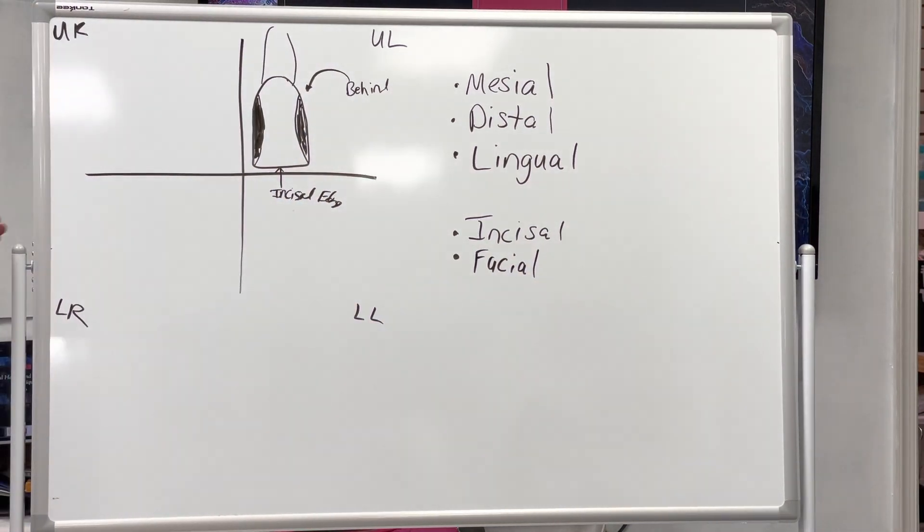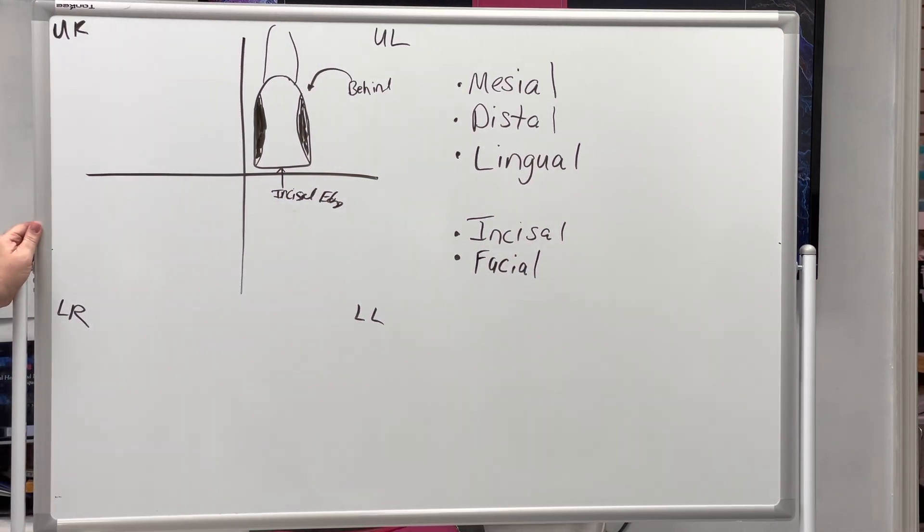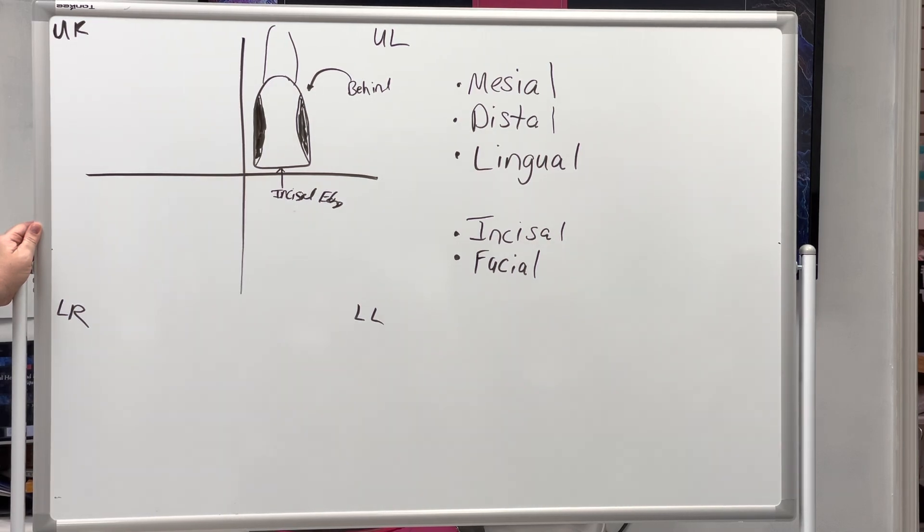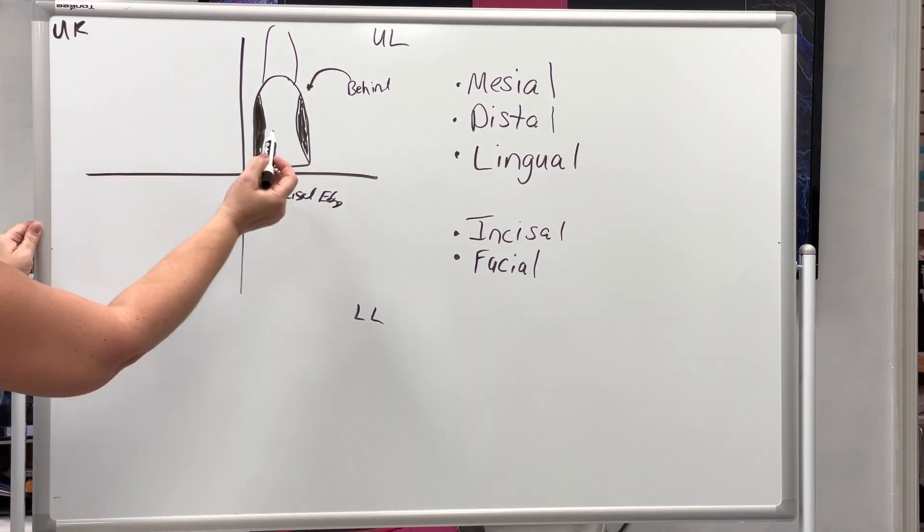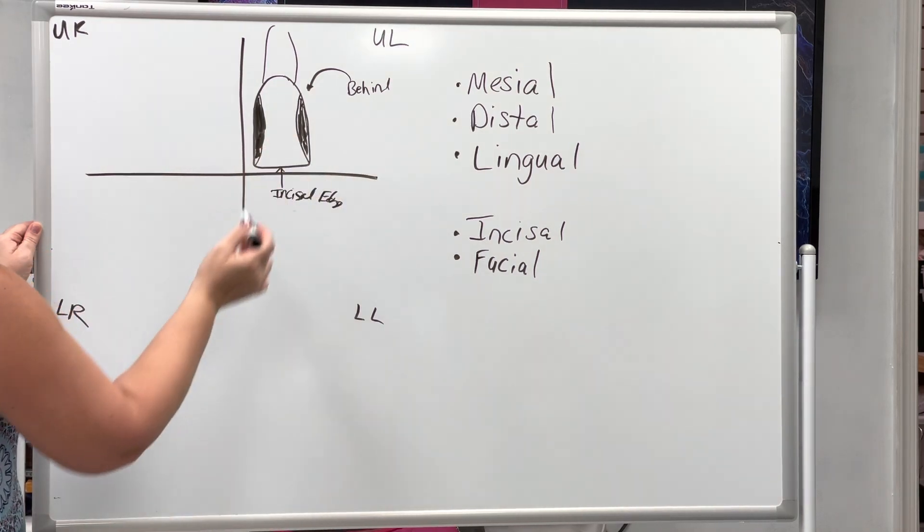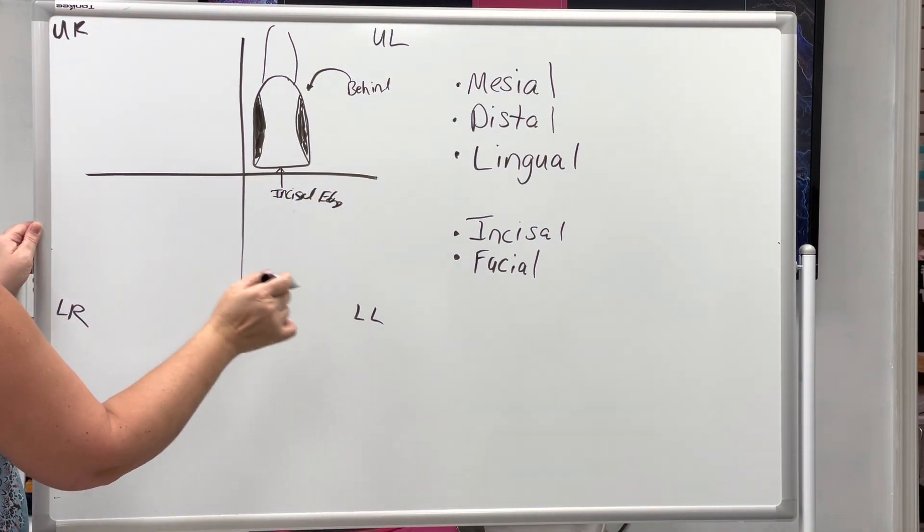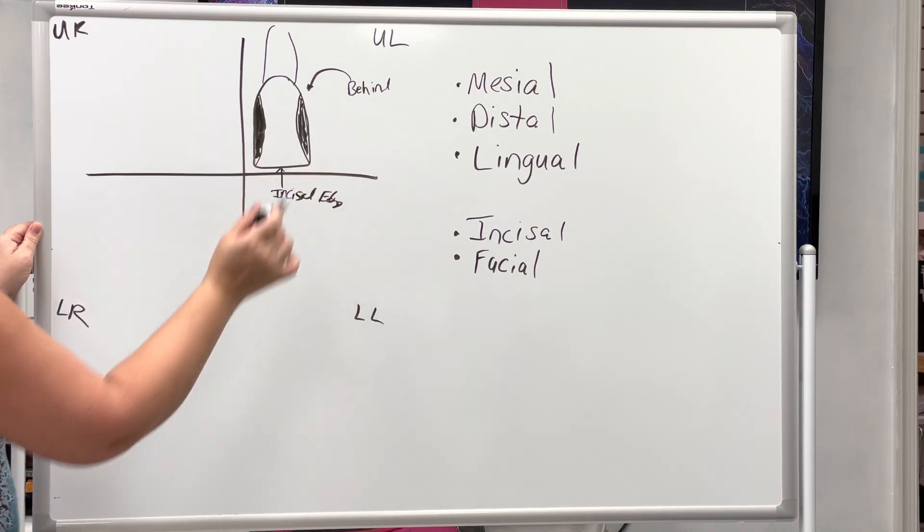The purpose of these anterior teeth are to initially bite into the sandwich, and then the tongue will push it back to the posterior where you can chew it up. So for the anterior teeth - the central, the lateral, the canine, all around - you have these five surfaces.